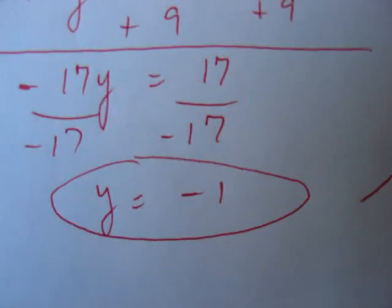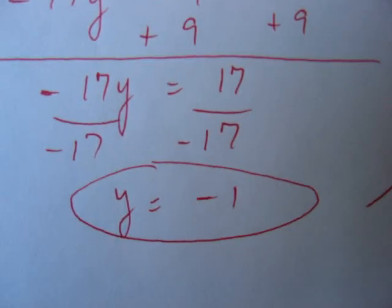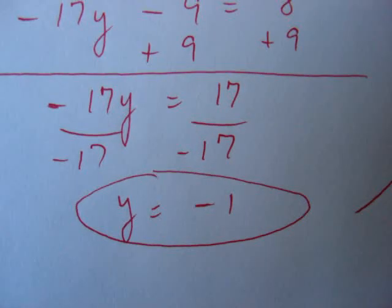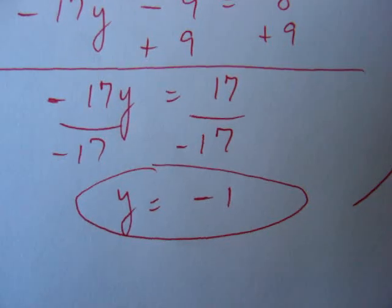That's part of our solution. The y-coordinate is negative 1, but we also need the x, because remember systems are looking for an intersection point. So we have our y, now we need to find our x.